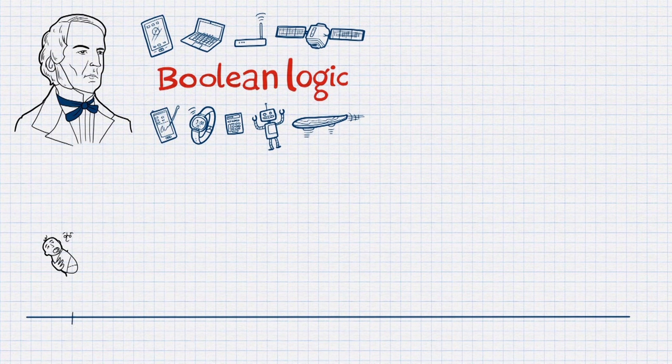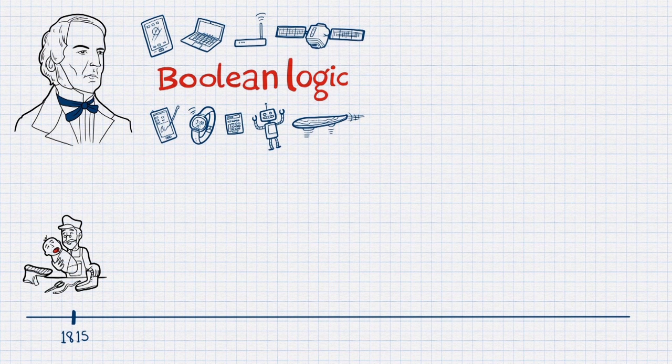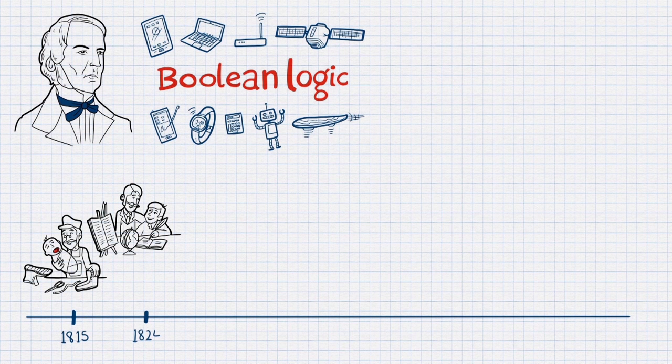George Boole was born in 1815 and had a natural flair for mathematics and problem solving. His father was a shoemaker who was passionate about science and passed on his love for science to his son.